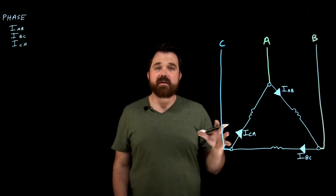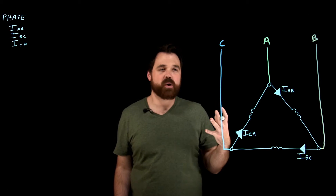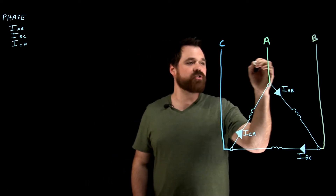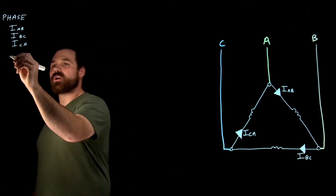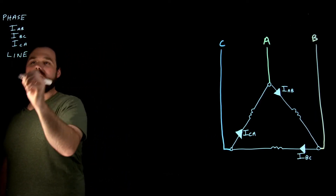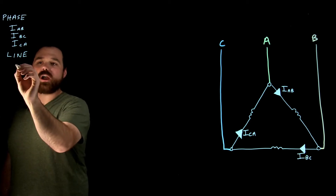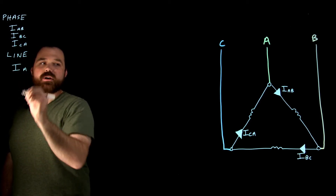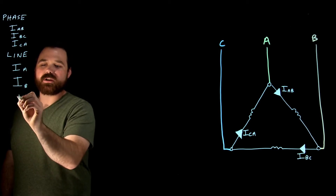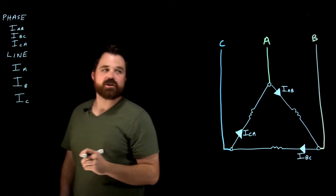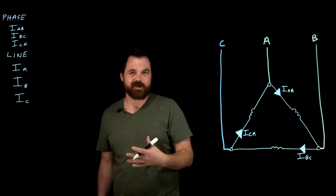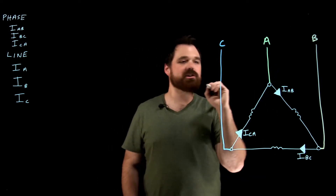The main point of this video is calculating line currents. When I'm calculating line currents, I have three currents: I have line A, which we call I_A; line B, which we call I_B; and line C, which I call I_C. So now let's start with A.